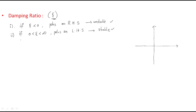The second order system response depends on zeta. Zeta decides how the output will be given by the system — the output behavior is determined by this damping ratio.